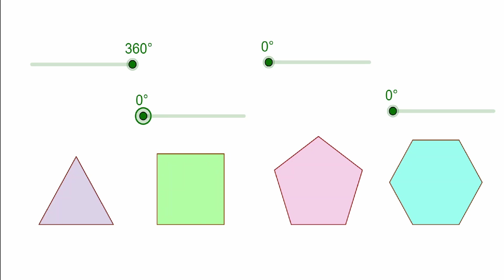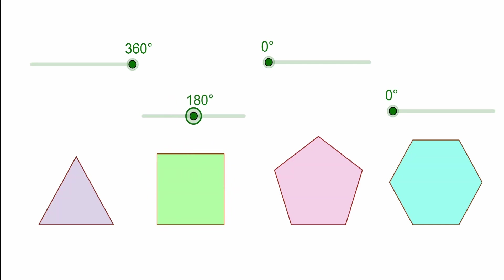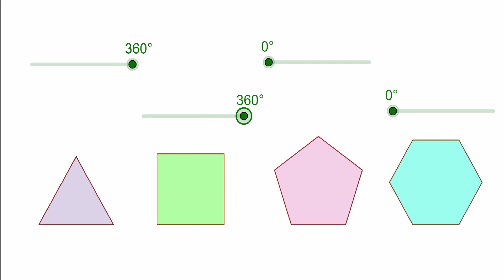Let's start rotating the square and let's see when it's rotated into itself. Notice that at 90 degrees, the square rotated into itself. Notice that at 180 degrees, the square rotated into itself. Notice that at 270, we also rotated into itself. And at 360, we rotated into itself. So all of those angles can be said to be the angle of rotational symmetry for a square.